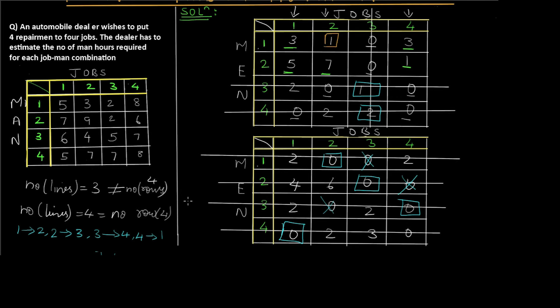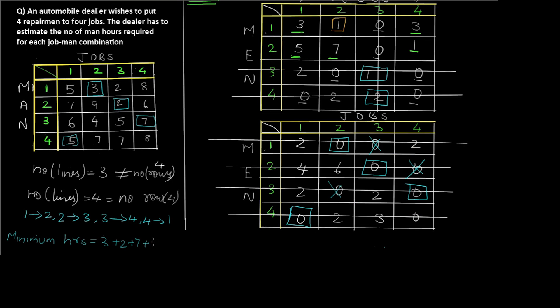Now we check the original table for the hours at the assigned positions. The values are 3, 2, 7, and 5. Adding all these: 3+2+7+5 = 17. So the minimum number of hours required to complete all the jobs is 17 hours. That is the final answer.